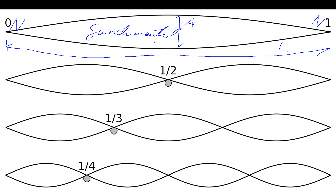We can work out the frequency of this wave. We have the length of the string, and the distance between two adjacent nodes is half a wavelength. So this length equals half the wavelength. If we knew the speed of the wave in the string, we could use this to work out the wavelength from the length of the string, and that would give us the frequency we would need to use.